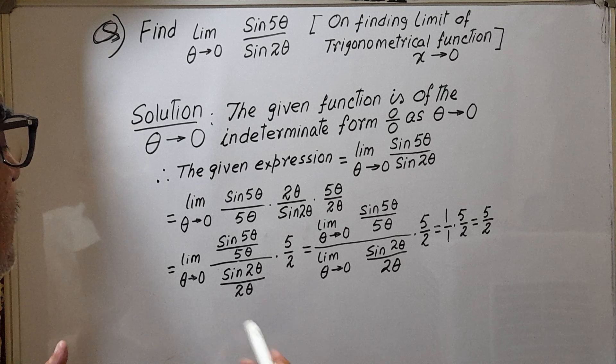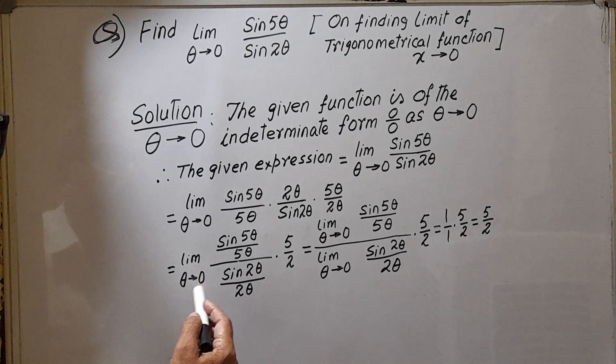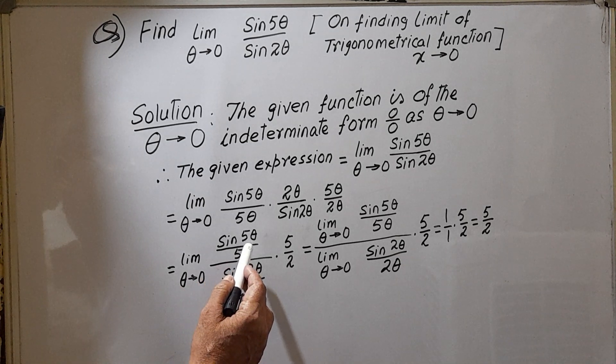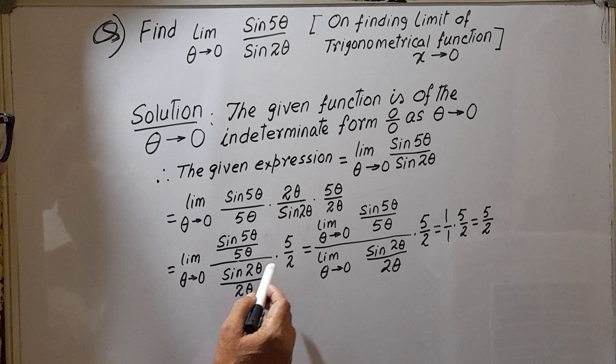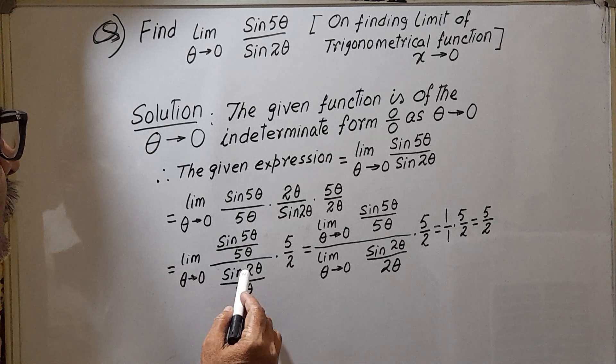Now we are breaking this again. How are we breaking? Limit theta tends to 0, sin 5 theta by 5 theta, divided by sin 2 theta by 2 theta.